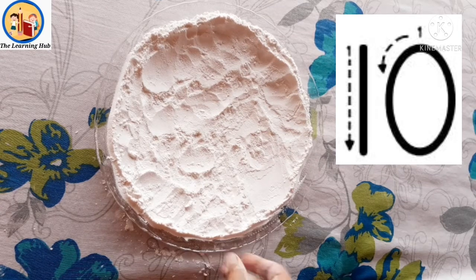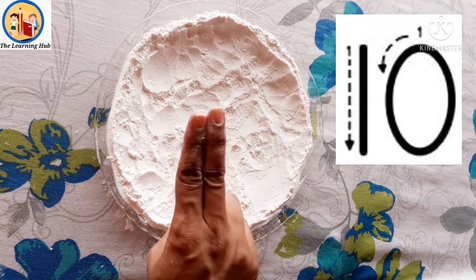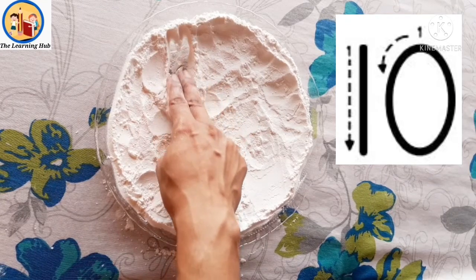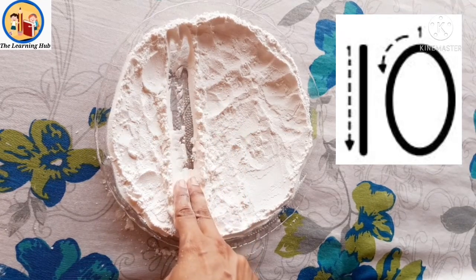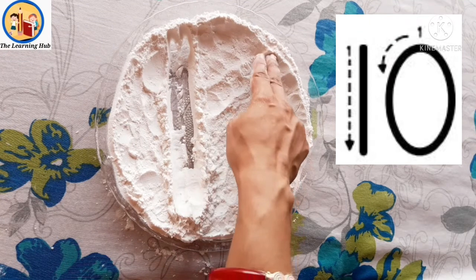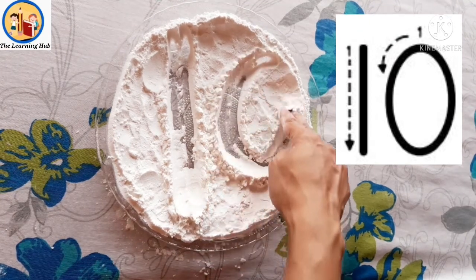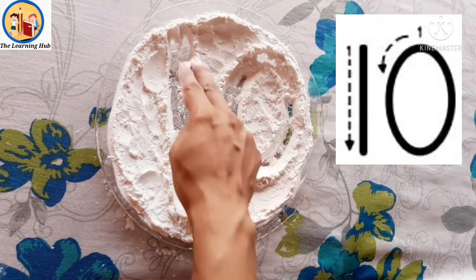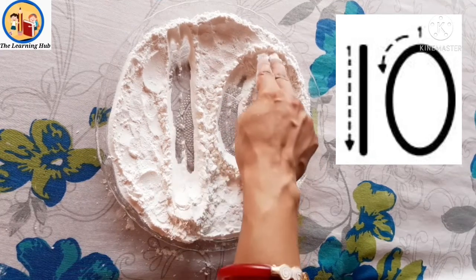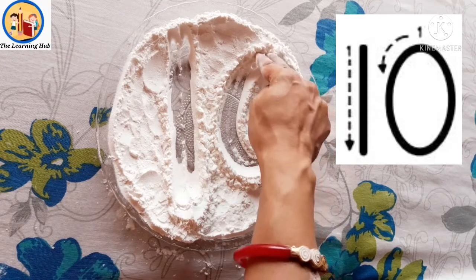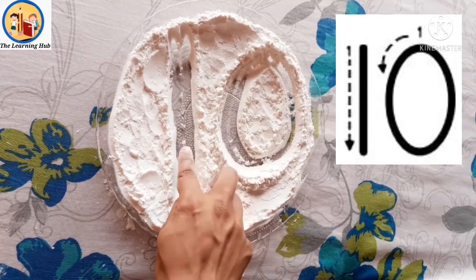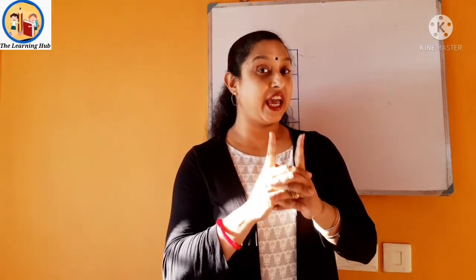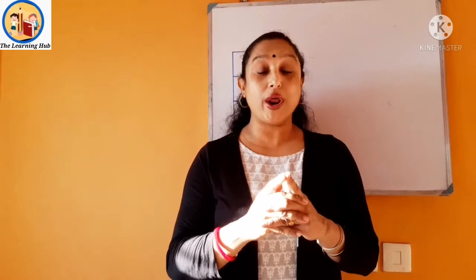Now it's time to do the formation. For that I have taken some rice powder, and we need to join these two fingers. Let's begin: first draw a standing line, that means number one, then draw a big circle, that means zero. One more time — make a standing line, then a circle means zero. So one, zero, ten.